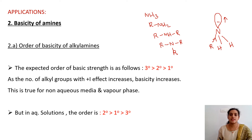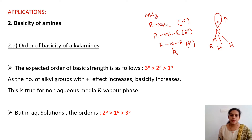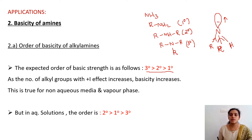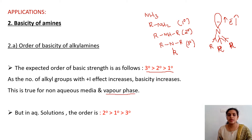We expect the order of basicity to be tertiary > secondary > primary, based on the number of alkyl groups. In the primary amine there is only one alkyl group; in the secondary amine there are two alkyl groups and two +I effects operate; in the tertiary amine there are three alkyl groups and three +I effects operate, increasing electron density on nitrogen. This expected order is true for vapor phase and in non-aqueous media this trend also holds good.